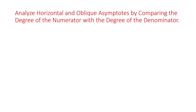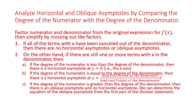Then we analyze horizontal and oblique asymptotes together. We compare the degree of the numerator with the degree of the denominator. We factor the numerator and denominator from the original expression for f of x, then simplify by crossing out like factors. If all the terms with x have been canceled out of the denominator, then there are no horizontal or oblique asymptotes.